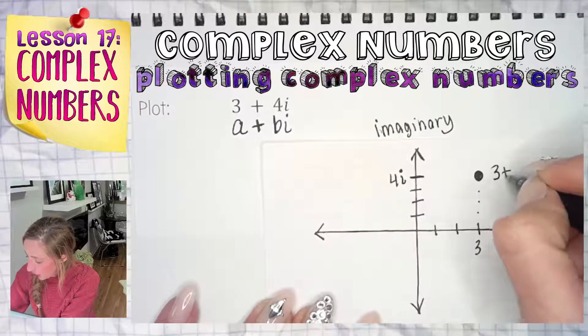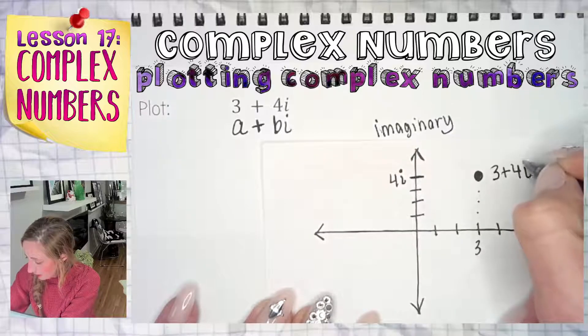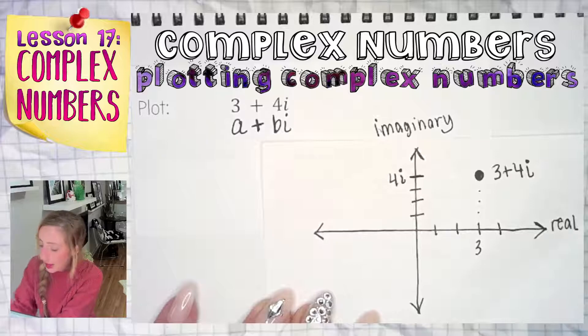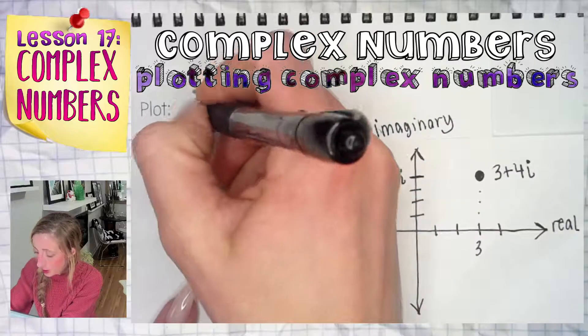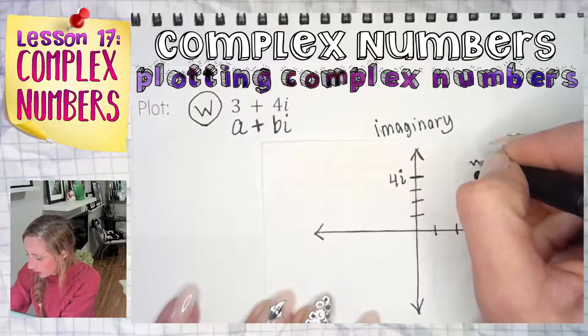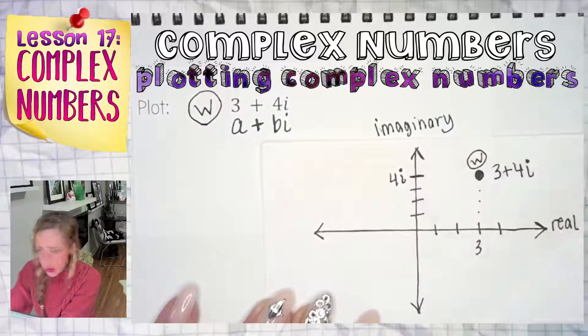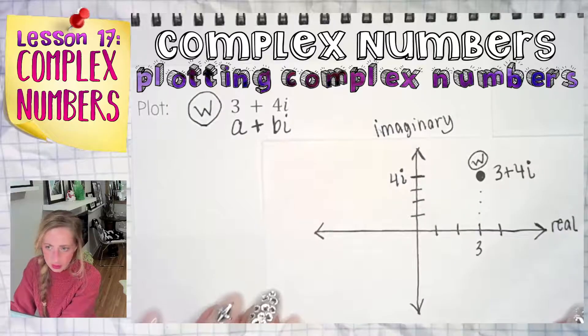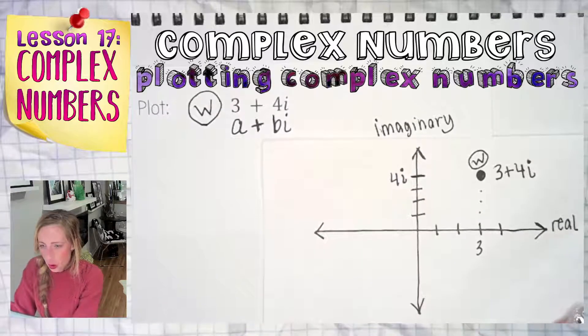And that is the point, three plus four I. So you could either label it with three plus four I, or if you wanted to assign a letter to it or something like that, you can call this, you know, point W, whatever you want to call it. And then you go over here and you can label the point with the W. Maybe you have a bunch of points on one set of axes, depends on the situation there.